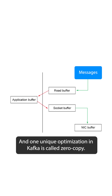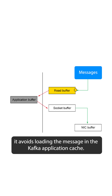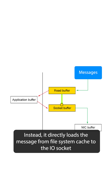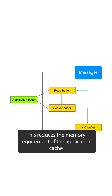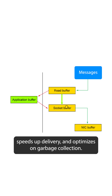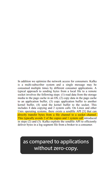One unique optimization in Kafka is called zero copy. When a consumer request to pull a message reaches the server, it avoids loading the message in the Kafka application cache. Instead, it directly loads the message from file system cache to the IO socket serving the response. This reduces the memory requirement of the application cache, speeds up delivery, and optimizes garbage collection. The result is that messages are published twice as fast compared to applications without zero copy.